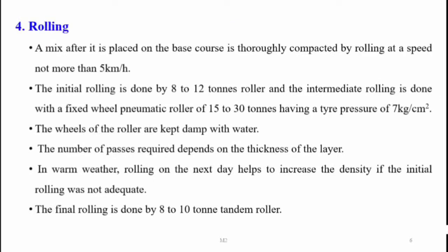The fourth step is rolling. After the mix is placed on the base course, it is thoroughly compacted by rolling at a speed not more than 5 km per hour. Rolling is done in three stages: initial or static rolling is done by 8 to 12 ton rollers; intermediate rolling is done with a pneumatic roller of 15 to 30 tons having a tire pressure of 7 kg per cm². The wheels of rollers are kept damp with water to prevent sticking. The number of passes depends on the layer thickness, and final rolling is done by 8 to 10 ton tandem rollers.